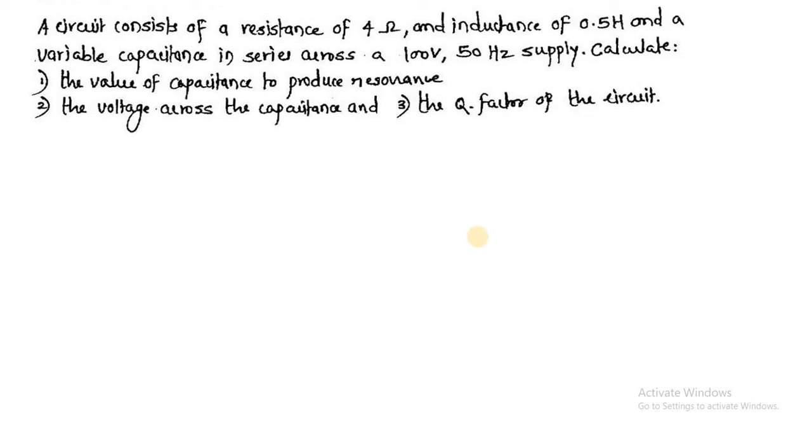A circuit consists of a resistance of 4 ohm, inductance of 0.5 henry and a variable capacitance connected in series across 100 volt 50 hertz AC supply. Calculate first the value of the capacitance which is going to produce resonance condition. Second, the voltage across the capacitance and third the quality factor of the circuit.